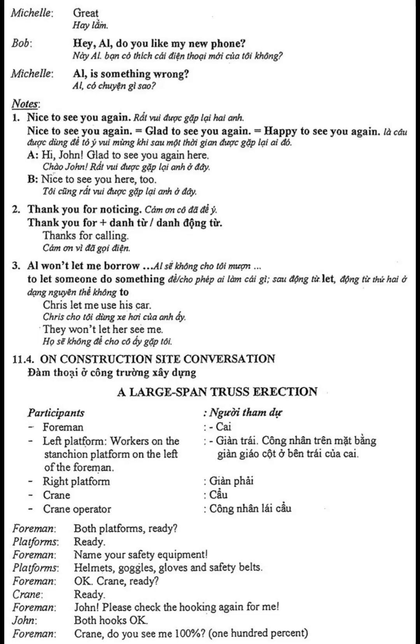Section 11.4 On Construction Site Conversation: A large span truss erection. Participants: Foreman, left platform workers on the stanchion platform, right platform, crane operator. Both platforms ready. Ready. Name your safety equipment. Helmets, goggles, gloves, and safety belts. Okay. Crane ready. Ready. John, please check the hooking again for me — both hooks. Okay.